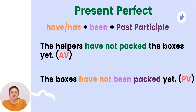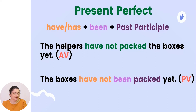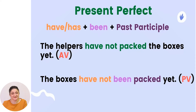Present perfect. To change present perfect into passive voice, you need the present simple forms of the verb 'to have' plus 'been' plus past participle. Example: 'The helpers have not packed the boxes yet.' becomes 'The boxes have not been packed yet.' So the boxes were not packed — they suffered the action.